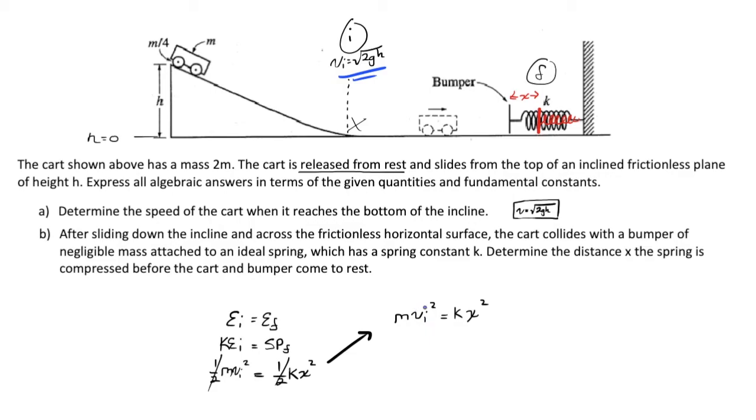Also at this point, let's go ahead and make the substitution. Note how we have vi squared, and we've determined that vi is in terms of a square root. If we make the substitution, we can remove the square root. So it looks like m times 2gh is equal to kx squared. Putting the two first, we have 2mgh is equal to kx squared.